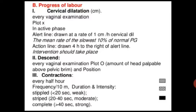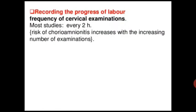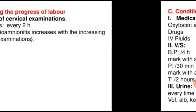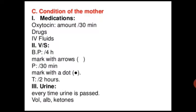Regarding recording the progress of labor: frequency of cervical examination is most studies every two hours, as the risk of chorioamnionitis increases with an increasing number of examinations. For maternal condition: medication including oxytocin amount per thirty minutes and drug IV fluid are recorded. Vital signs: BP every four hours marked with an arrow, and pulse every thirty minutes marked as a dot. Temperature every two hours. Urine volume, albumin, and ketones are recorded every time urine is passed.